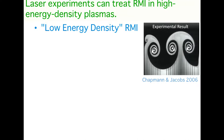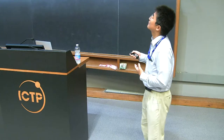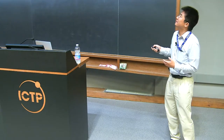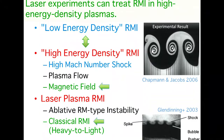In terms of the Richtmyer-Meshkov instability, there are many beautiful results from room-temperature experiments. But instead, laser experiments can treat high-energy-density plasma — the advantage being that they can generate high Mach number shocks and plasma flows, so we can examine the effect of the magnetic field. For laser plasma RMI, there are two kinds: the ablative RM-type instability and the classical type. In this talk, I focus on the classical type of Richtmyer-Meshkov instability in the heavy-to-light configuration.